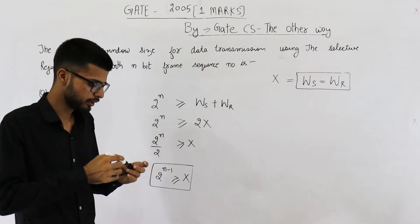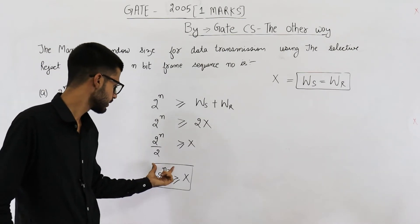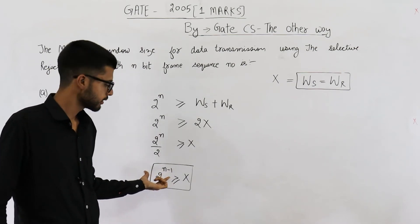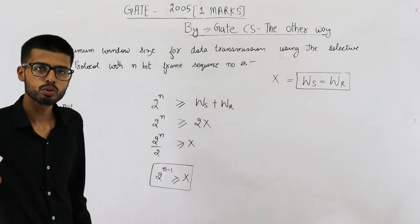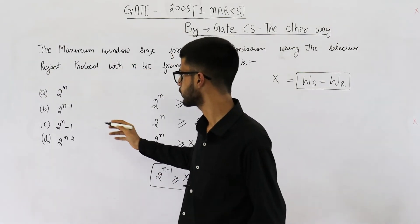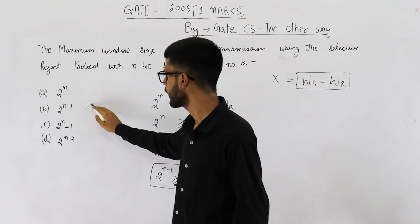This can also be read like x is smaller than or equal to 2 power n minus 1. So the maximum value that x can take is this because x can be this or anything smaller than this. That means maximum value of n is 2 raised to the power n minus 1. So let us see what is our answer. It is 2 raised to the power n minus 1.